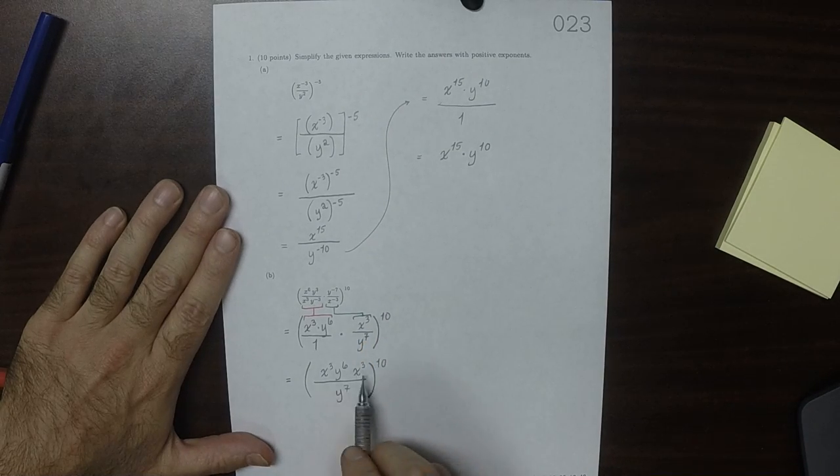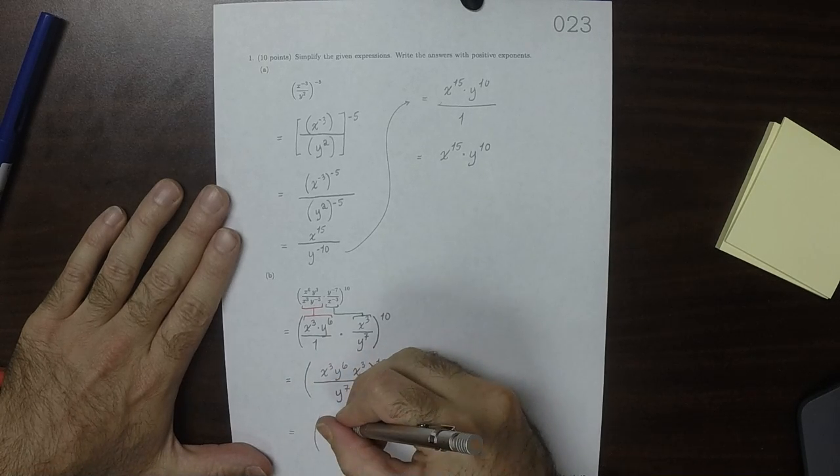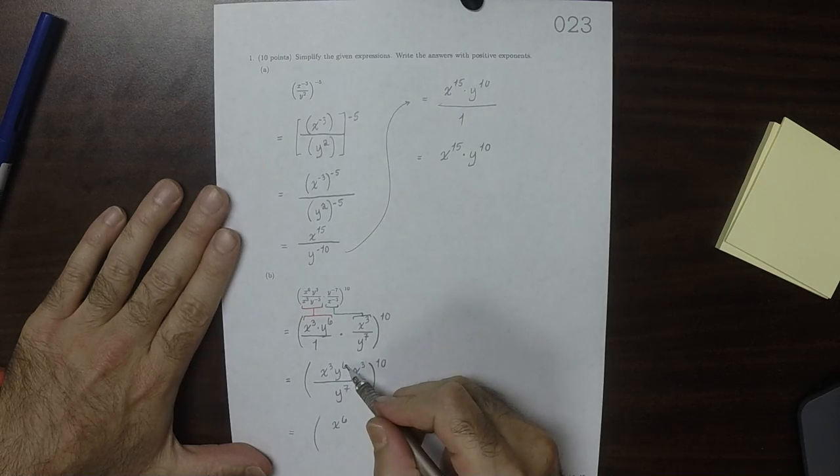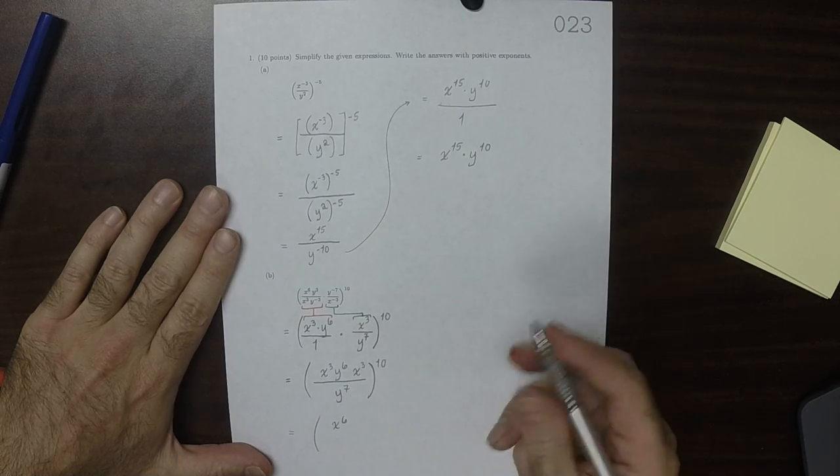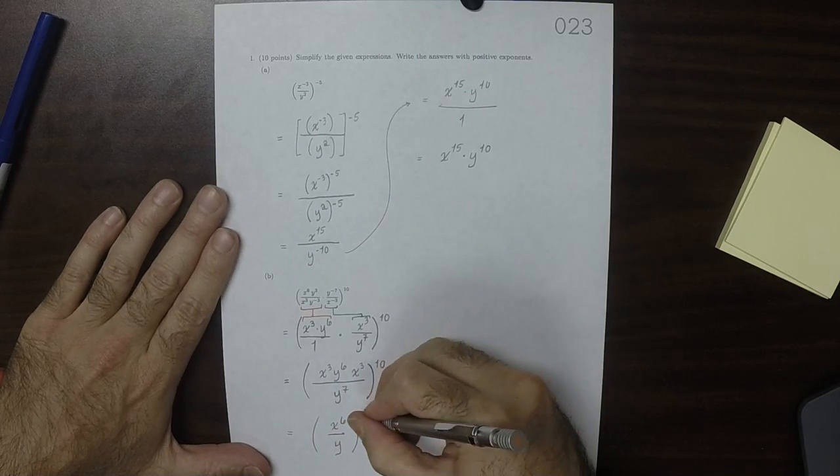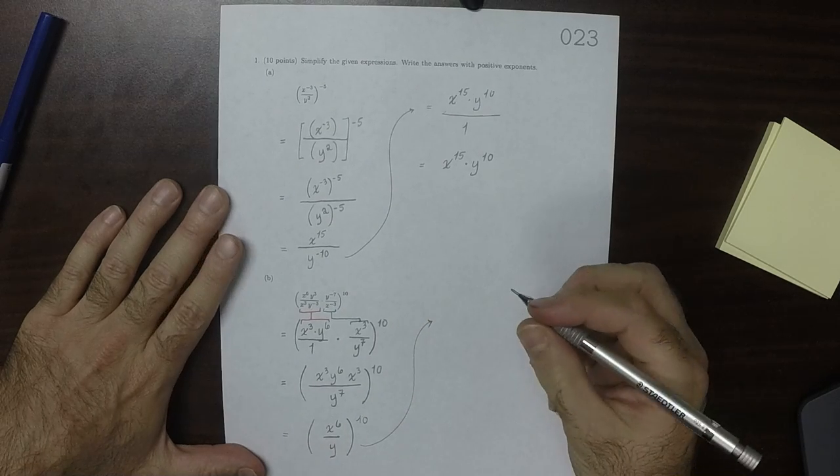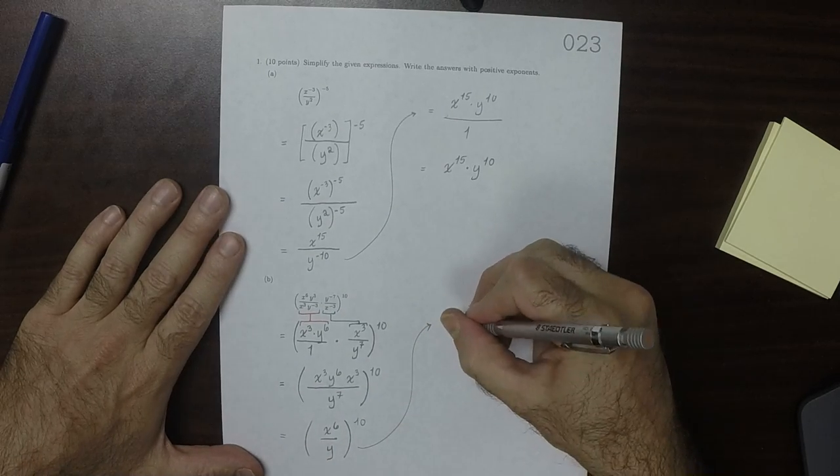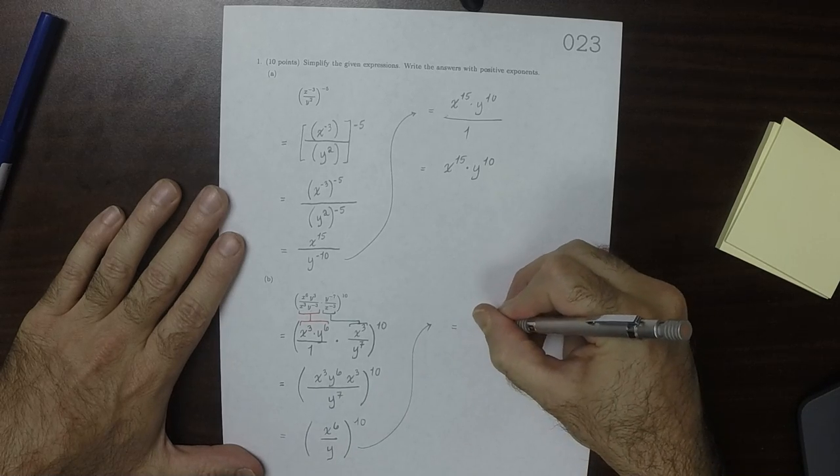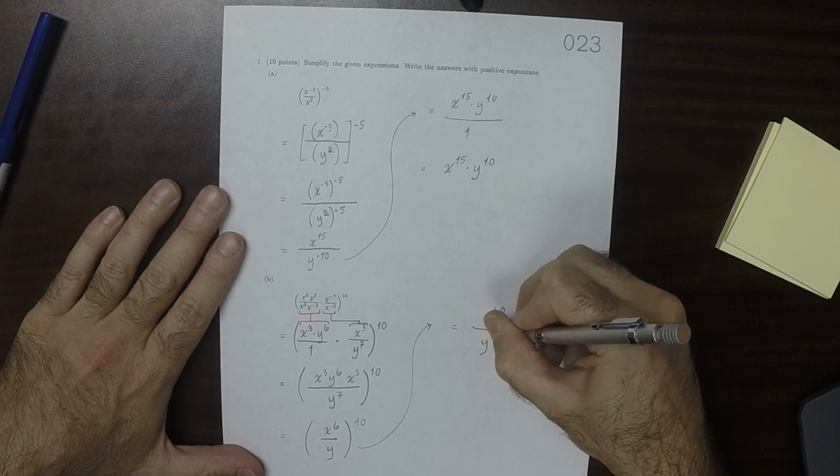Okay, so I'll combine the x's. That would be x to 6. I'll combine the y's, so 6 in the numerator, 7 in the denominator, so there's 1 left in the denominator. And now I'll distribute that 10 exponent from the outside. So this would be x to 60 divided by y to 10.